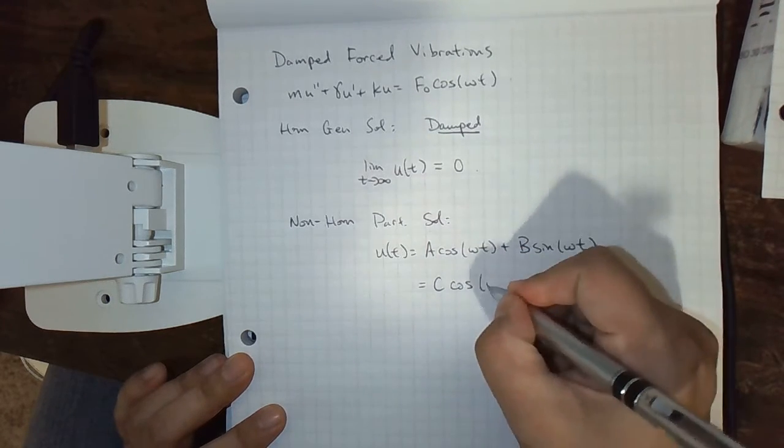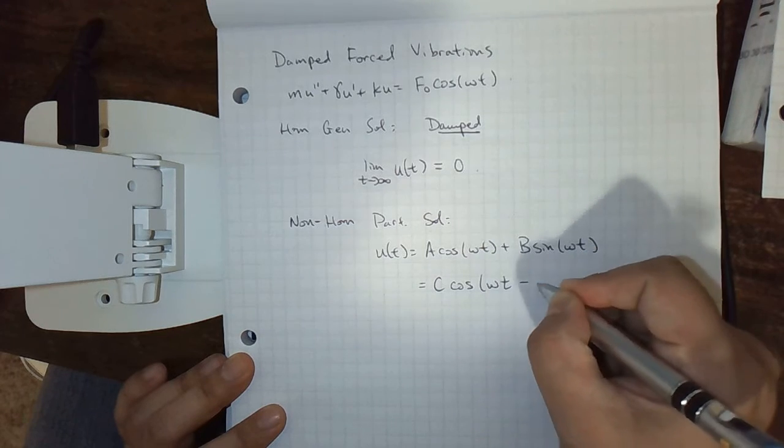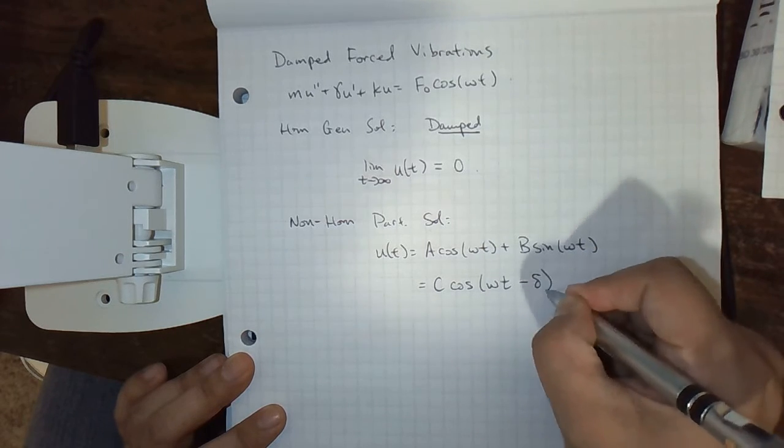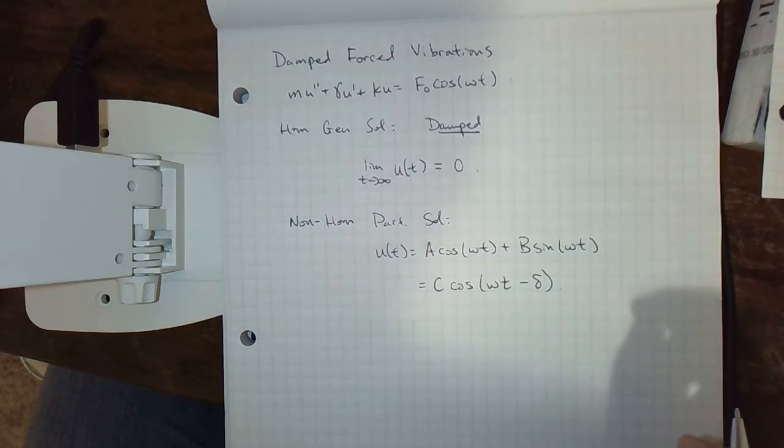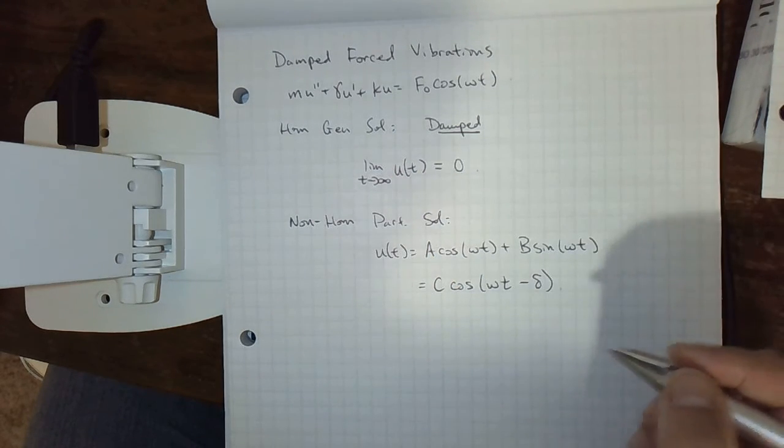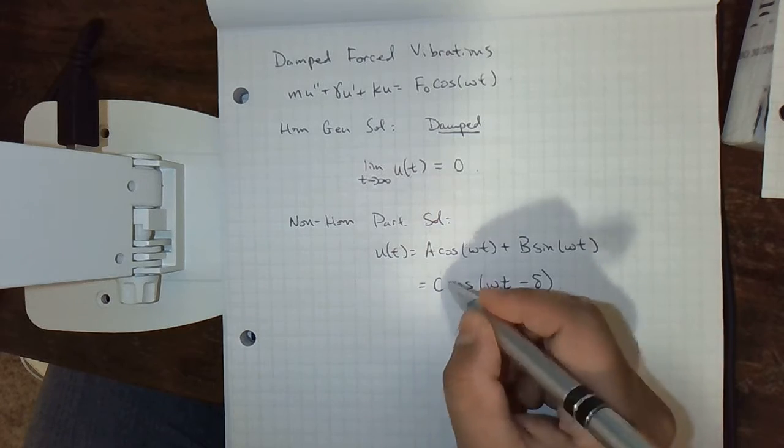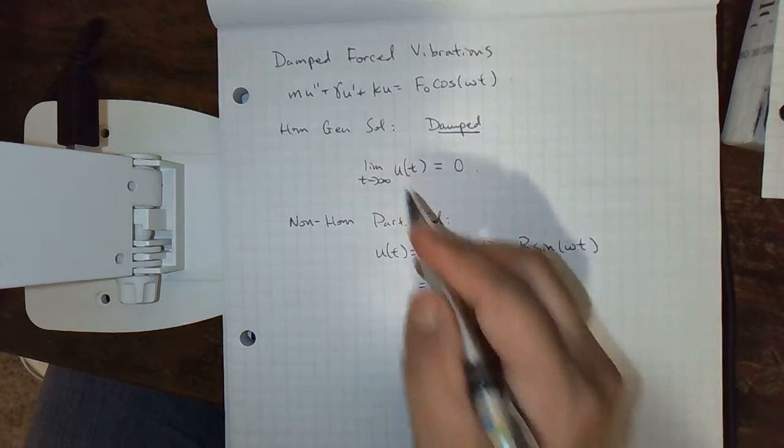So we could write cosine omega t minus delta. We've normally done that over here, but we can do it over here too. And so this is going to have some amplitude based on c, and it will not go to zero.